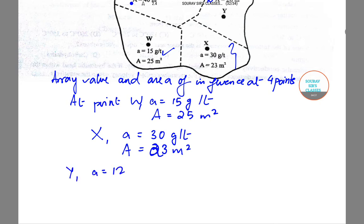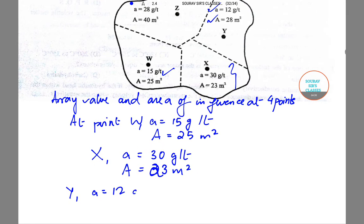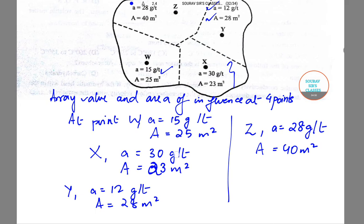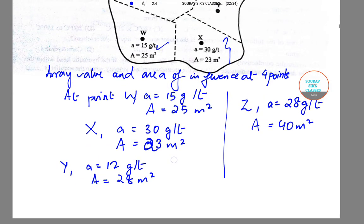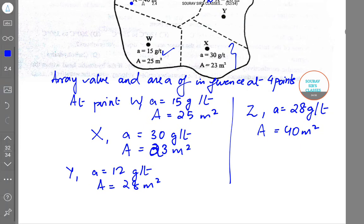At point Y, a = 12 g/L and A = 28 m². At point Z, a = 28 g/L and A = 40 m². Now I don't require the figure anymore because I have all the values written.